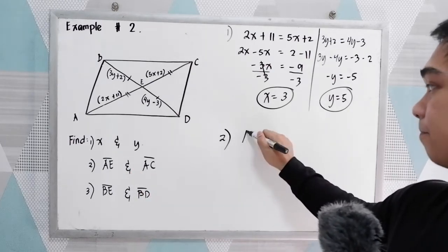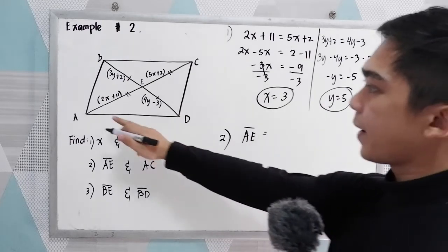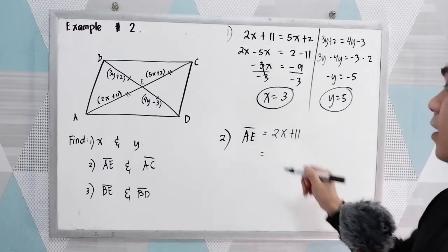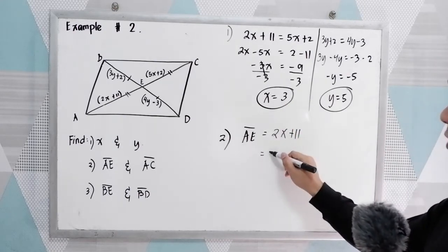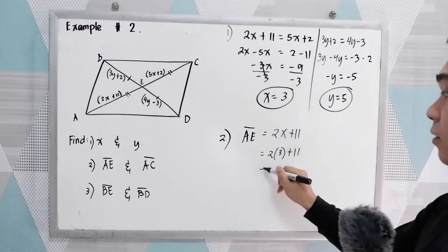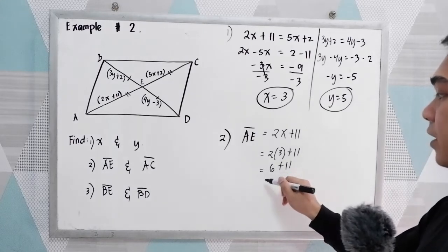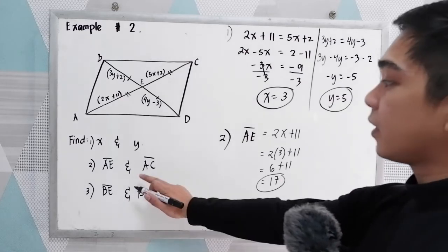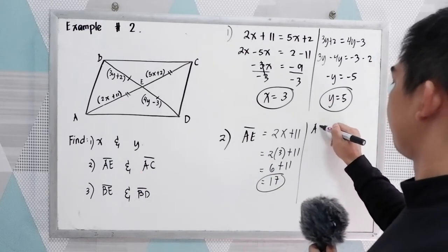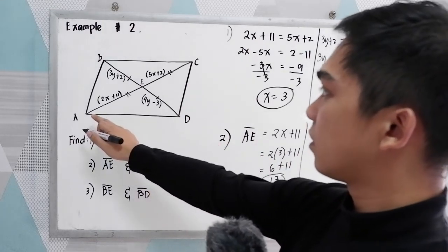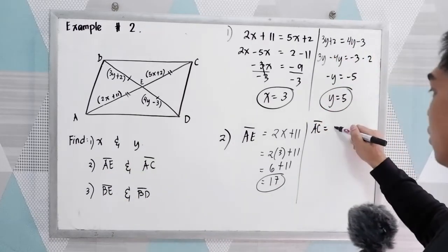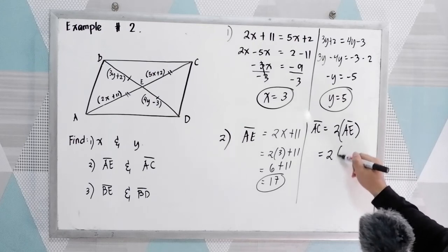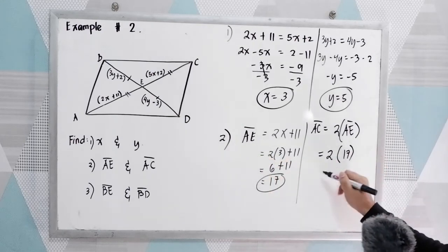Next, find AE. AE is 2x plus 11. Now substitute the value of x. So 2 times 3 plus 11. 2 times 3, that is 6 plus 11, so we have 17. Now we have AC. We know that AC is twice AE. Twice AE, so we just need to multiply 2 times. AE is 17, that is 34.